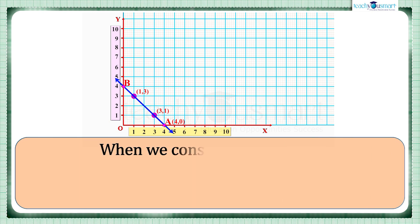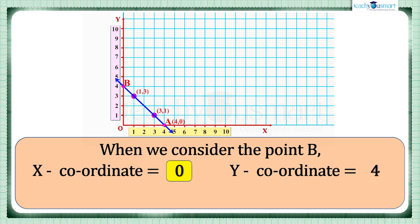Similarly we can find the coordinates of B. The x-coordinate is the perpendicular distance from the y-axis. Here the point lies on the y-axis, so the x-coordinate is 0. And the perpendicular distance from the x-axis is 4, that is the y-coordinate is 4. Therefore point B is (0,4).